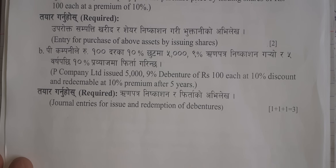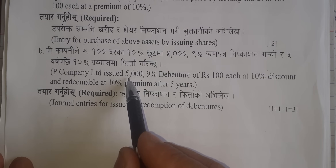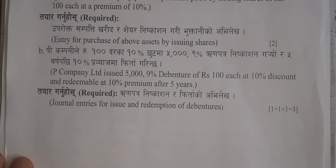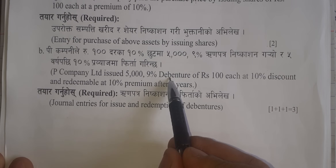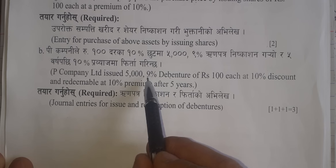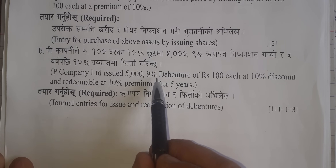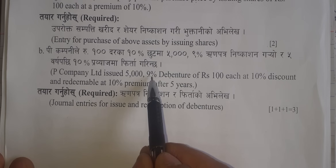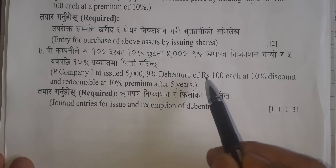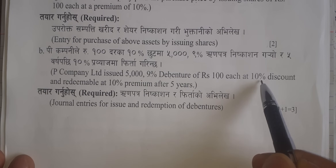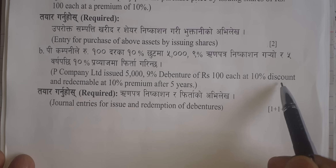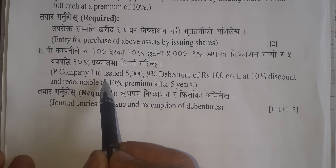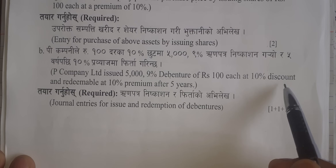Please don't forget to subscribe to my channel. The number of debentures is 5,000. 5,000 unit debentures are issued to the public. 9,000 debentures are of rupees 100 each at 10% discount.